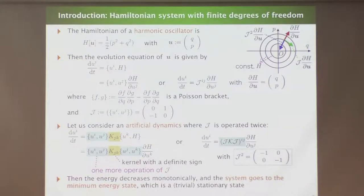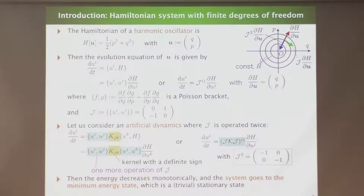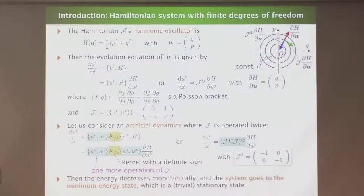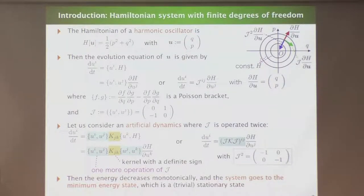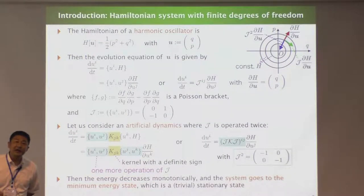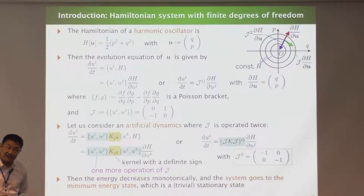The evolution equation for this artificial dynamics is given here: this is the original one, but we have one more operation of the Poisson tensor. For later use, a symmetric kernel with a definite sign is inserted here. This can be simply a unit tensor — (1,0; 0,1) is OK, or (2,0; 0,2) may also be OK.